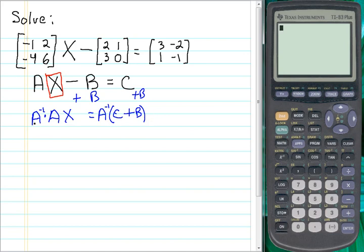On the left side, A inverse times A, by definition, if you multiply a matrix times its inverse, you get the identity matrix. And by definition, the identity matrix times X equals X. And that equals what we have up here, A inverse times the sum of C plus B.